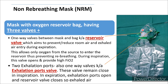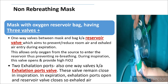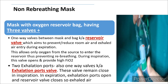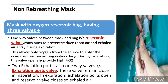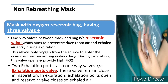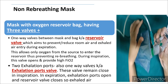During inspiration, the exhalation port valves are closed and the reservoir valve opens, so high FiO2 — high oxygen concentration — is delivered to the patient. During expiration, the exhalation ports open and the reservoir valve closes, so exhaled air exits into the environment. This is the main difference between the NRM and the partial re-breathing mask. This is confirmed in the video showing the one-way valves at the exhalation ports, the reservoir valve, and the oxygen tubing connected to the 1-liter reservoir bag.